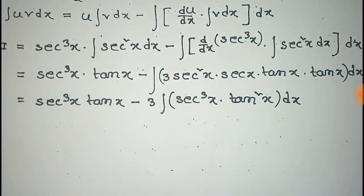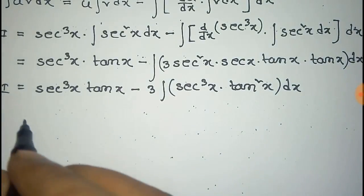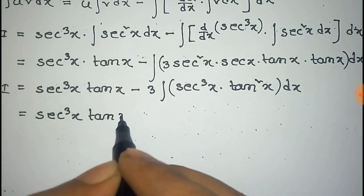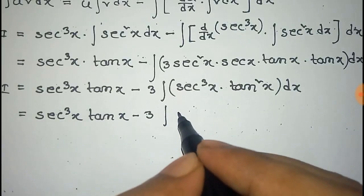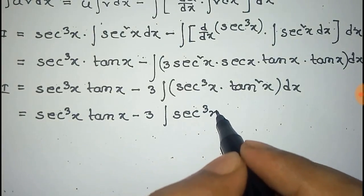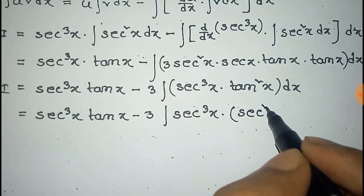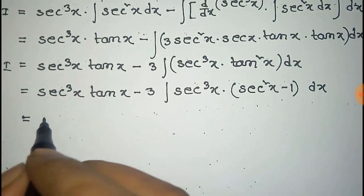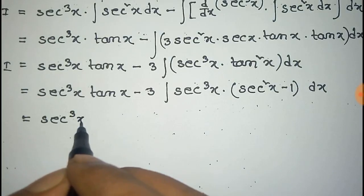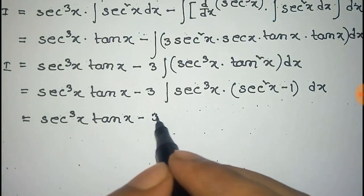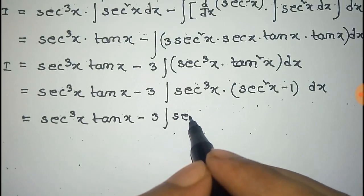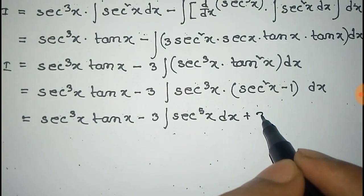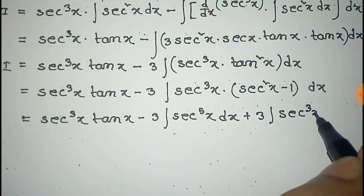Now this can be written as sec cubic into tan x minus 3, which is a constant taken out of the integration. This equals minus 3 sec cubic, and we write tan squared x as sec squared x minus 1 dx. Multiplying sec cube x through the bracket, we get sec to the power 5x dx plus 3 times the integration of sec to the power 3x dx.